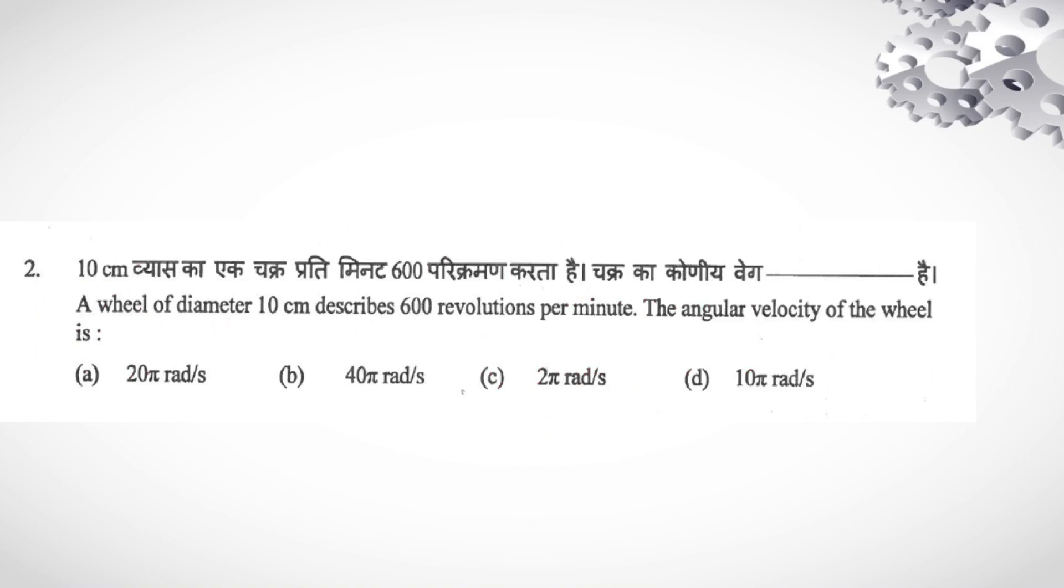Question is, a wheel of diameter 10 cm describes 600 revolution per minute. The angular velocity of the wheel is how much? So wheel is like this. Its diameter is 10 cm. The angular velocity, we know.